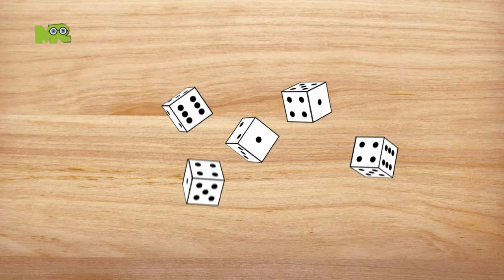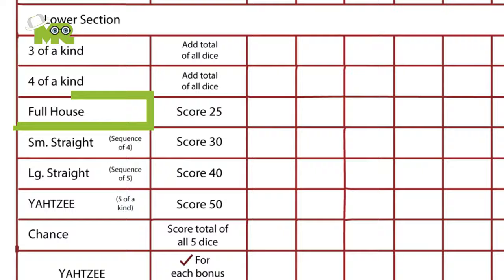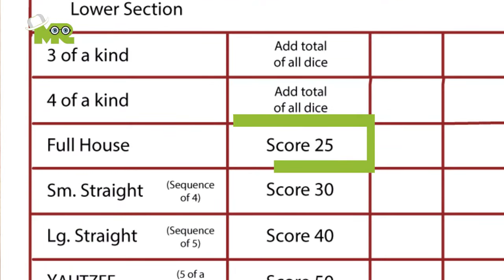If a pair and three of a kind are executed in combination, a full house occurs and 25 points are awarded.